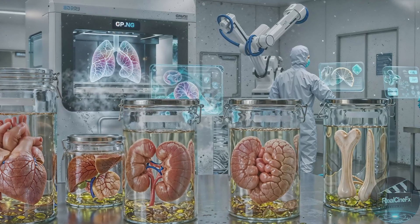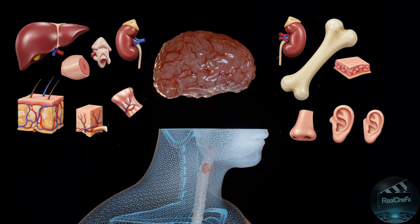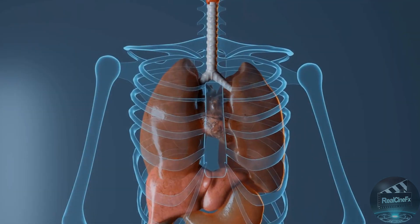So far, scientists have 3D-printed parts like skin, bone, ears, tiny heart tissue, and pieces of kidney, liver, blood vessels, and cartilage.